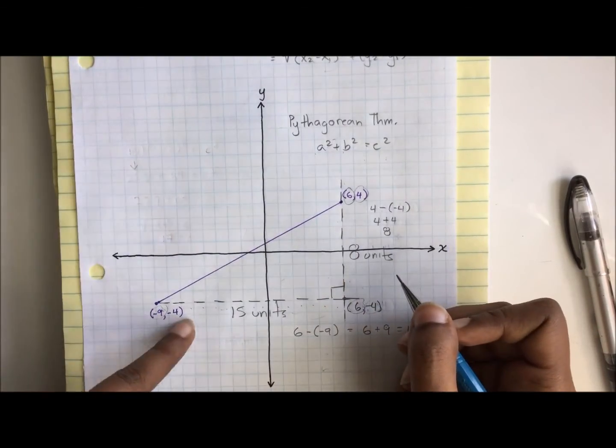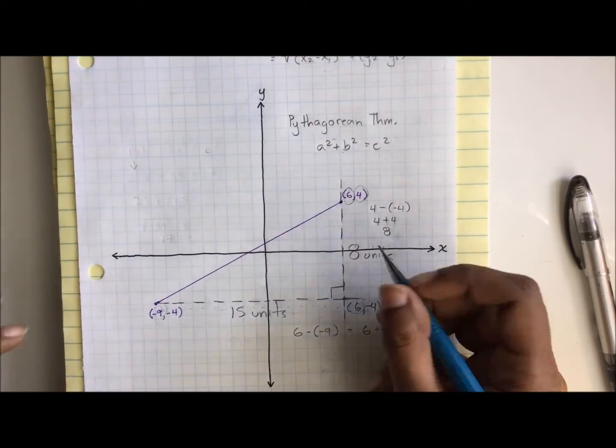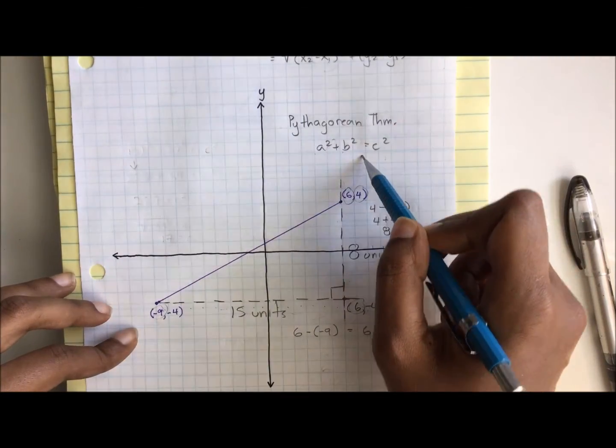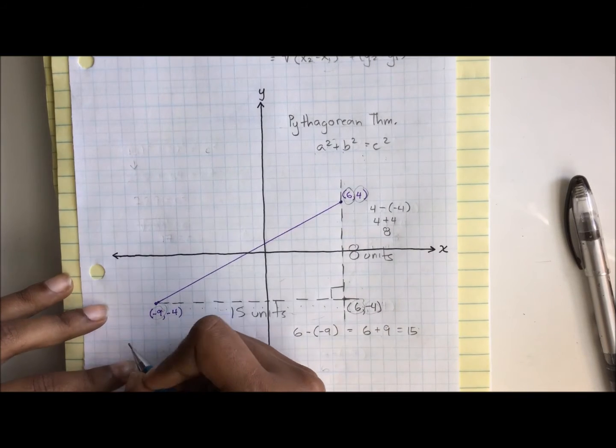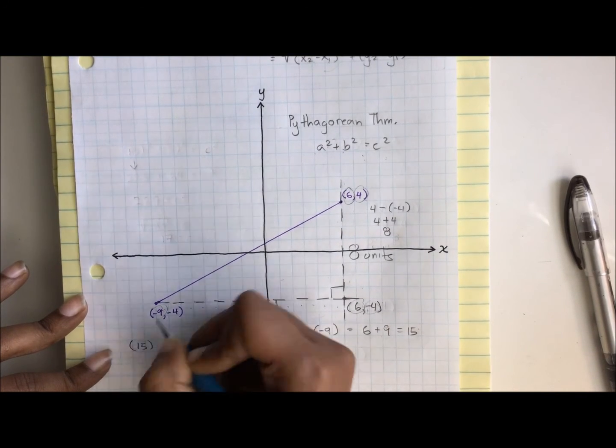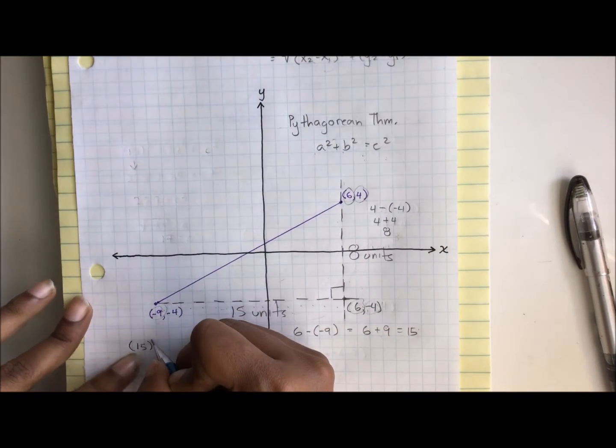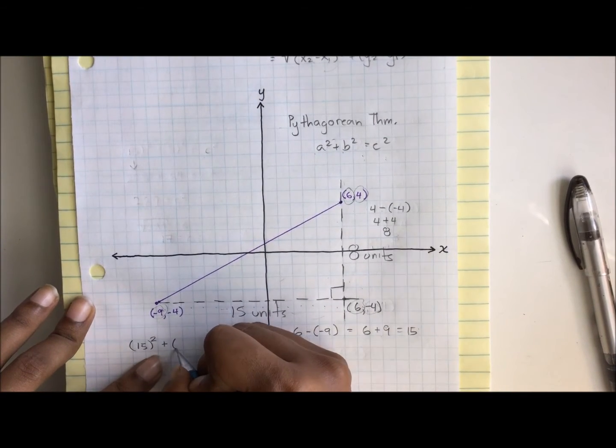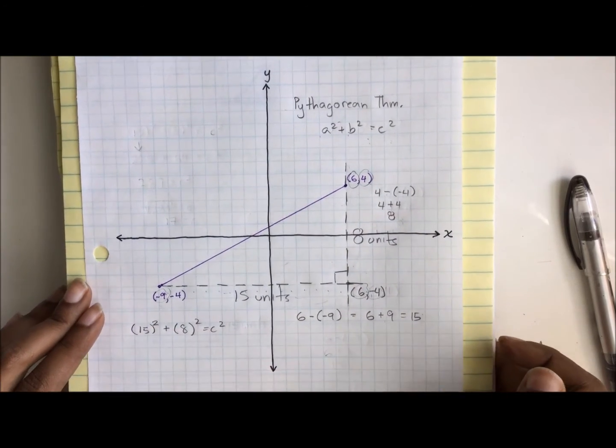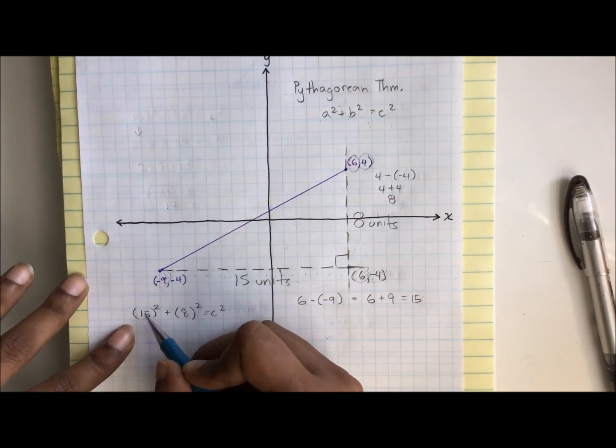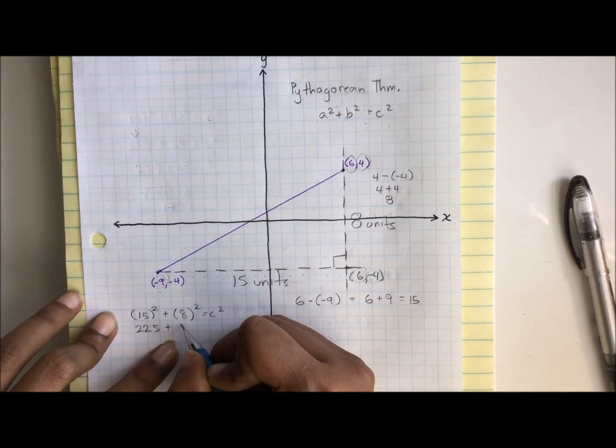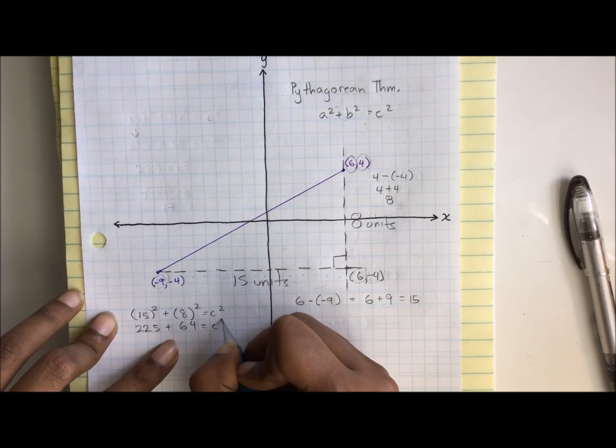We have our legs. So let's use these legs to plug into the Pythagorean theorem formula and figure out what the length of the third side is. I'm going to rewrite a squared plus b squared equals c squared as 15 squared plus 8 squared equals c squared.